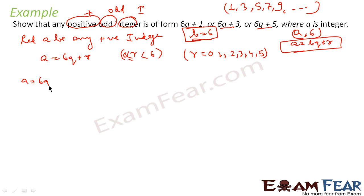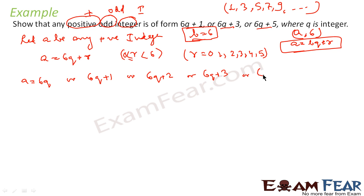So I can write a as: 6q (when r=0), or 6q+1 (when r=1), or 6q+2 (when r=2), or 6q+3 (when r=3), or 6q+4 (when r=4), or 6q+5 (when r=5). These are the six possible values of a, since r is always ≥ 0 and less than b, and b = 6 here.